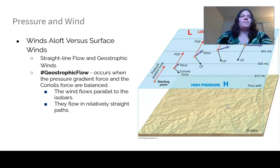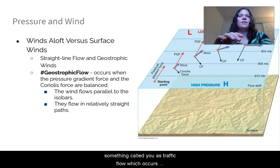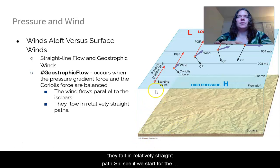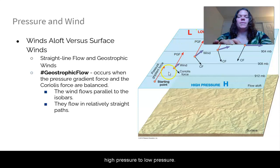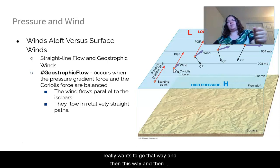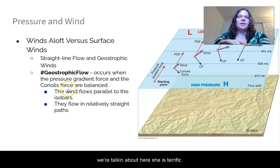So when we have these straight line flow, we end up having something called geostrophic flow, which occurs when the pressure gradient force and the Coriolis force are actually in balance. So the wind flows parallel to the isobars, and they flow in relatively straight paths. So here we see if we start towards the high pressure, pressure gradient force pulls it towards the low pressure, and then the Coriolis starts tugging it this way. So the pressure gradient wants to go that way, and then the Coriolis tugs it this way, and then they end up in some kind of balance. And that is what we're talking about here, geostrophic flow.